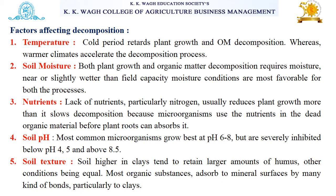Regarding nutrients, a lack of nutrients, particularly nitrogen, usually reduces plant growth more than it slows decomposition, because microorganisms use the nutrients in dead organic material before plant growth can absorb them. In case of soil pH, most common microorganisms grow best under a pH range of 6 to 8, but are severely inhibited below pH 4.5 and above pH 8.5.